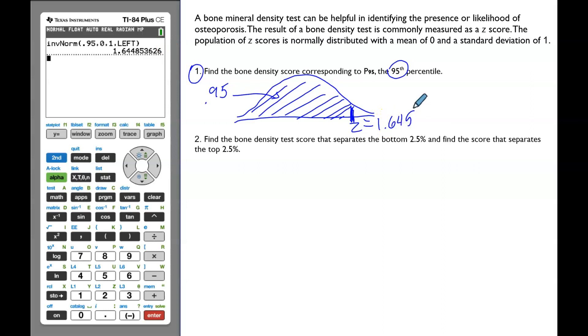We are going to round this score to 3 decimals. This is a special z-score. Usually, z-scores are rounded to 2 decimals.